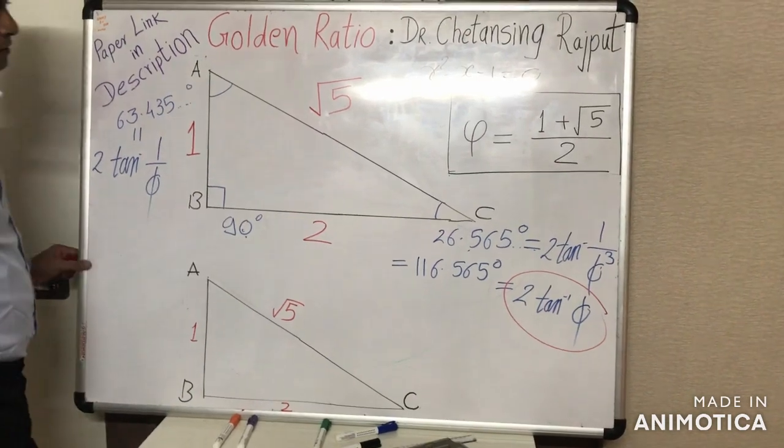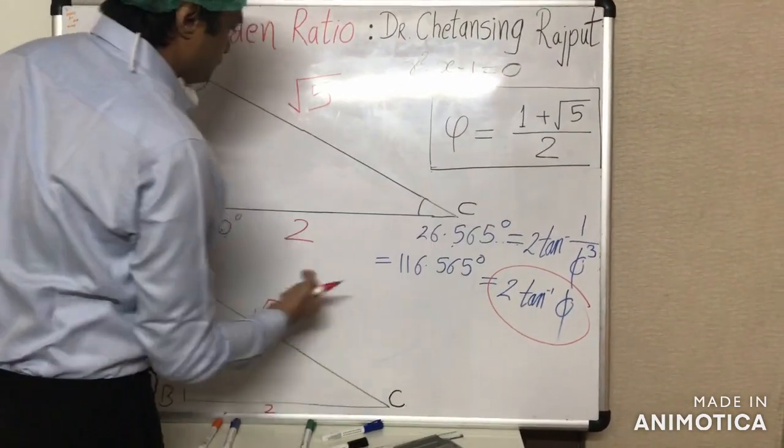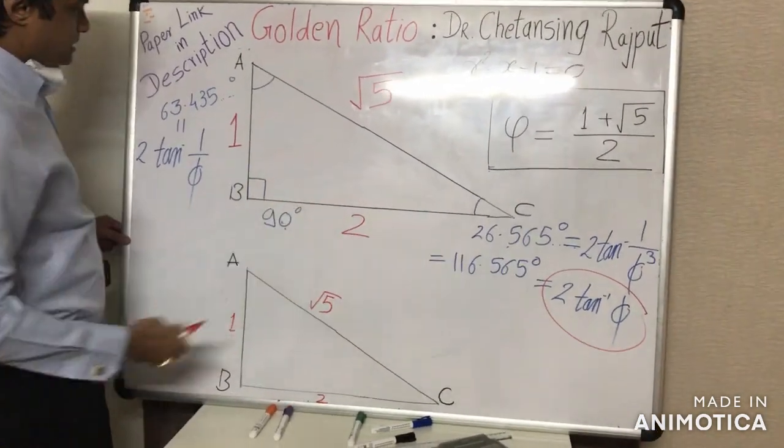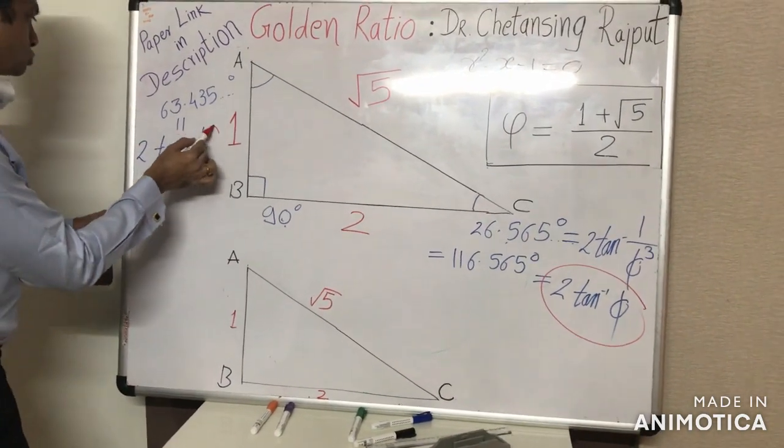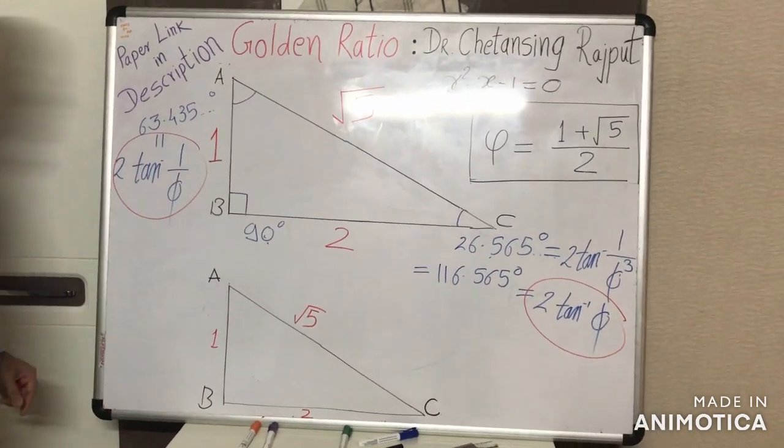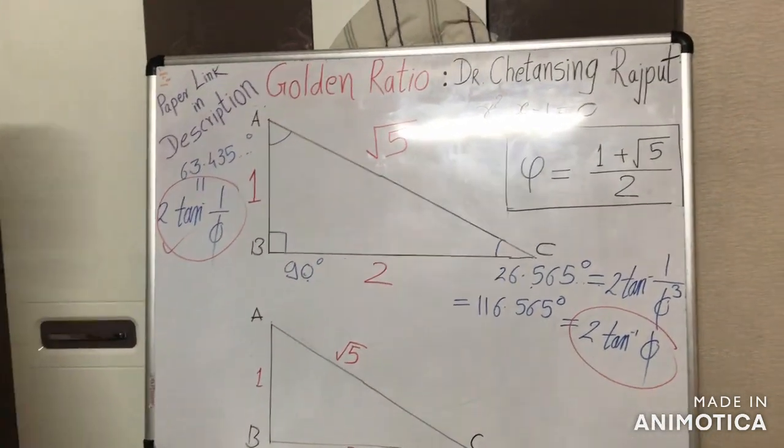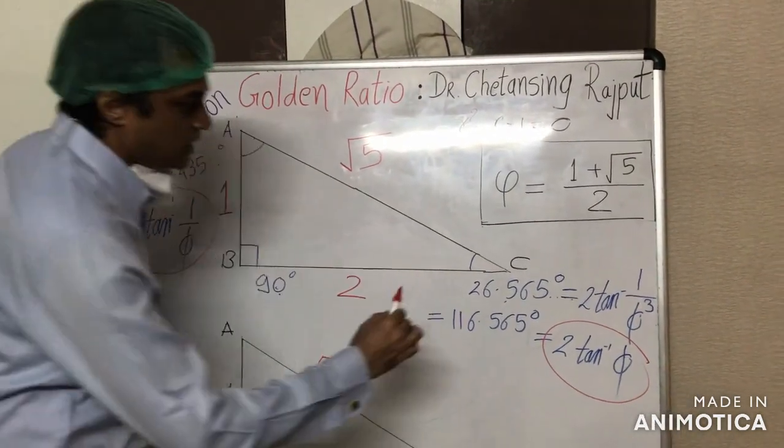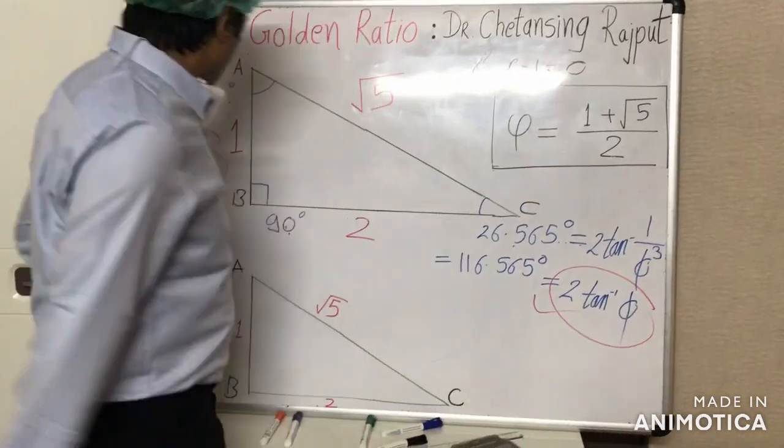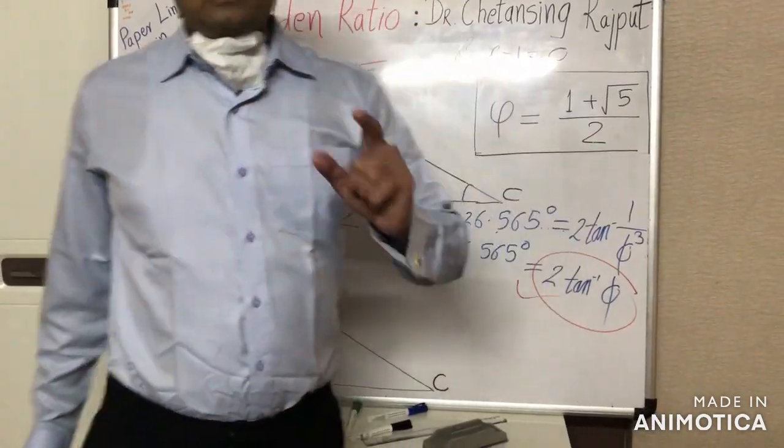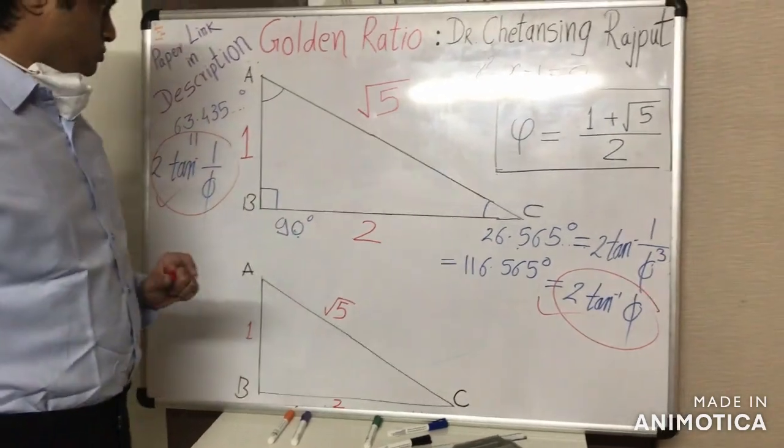And the angle against the denominator side, the longer cathetus, that angle is twice the arc tangent of inverse of golden ratio. And these two angles, twice the arc tangent of inverse golden ratio and twice the arc tangent of golden ratio, these two angles are precisely the angles of golden rhombus.